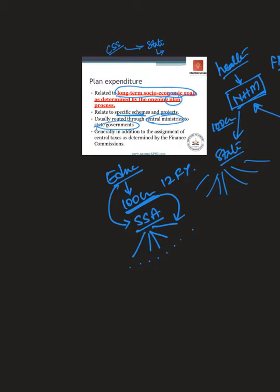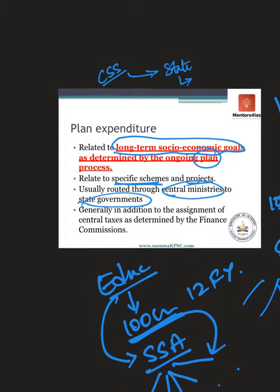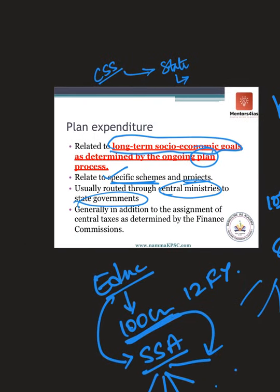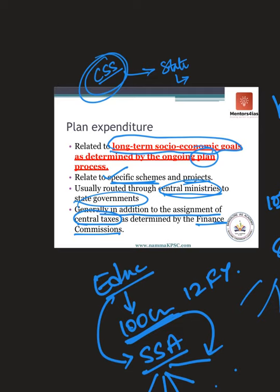This is how planned expenditures were executed — through specific schemes like Sarva Shiksha Abhiyan, National Health Mission, JNNURM, etc., routed through central ministries to state governments. This was generally in addition to the assistance through central taxes determined by the Finance Commission. The Finance Commission would allocate a certain amount from the divisible pool to state governments, and separately the central government would give money through centrally sponsored schemes.